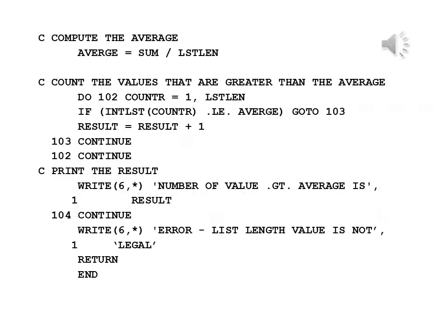Here you see the use of unformatted output. In this case, we still use a device code of 6 for the printer, because we want to state the device explicitly, even though we are not using a format statement.